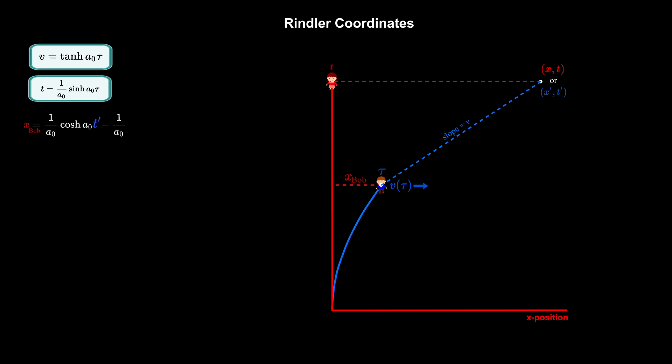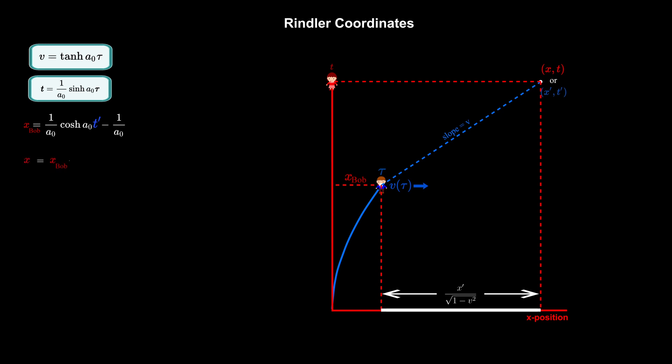The rest of the distance to the event, according to Alice, can be represented by drawing two vertical dotted red lines from the ends of the blue line to Alice's x-axis. We know the distance between these lines along Alice's x-axis because we scaled the x and x' axes relative to each other in a previous video. So if the blue dotted line has length x', then the corresponding distance along Alice's x-axis is x' over the square root of 1 minus v squared. So the x-position of the event, according to Alice, is Bob's x-position plus x' over the square root of 1 minus v squared.